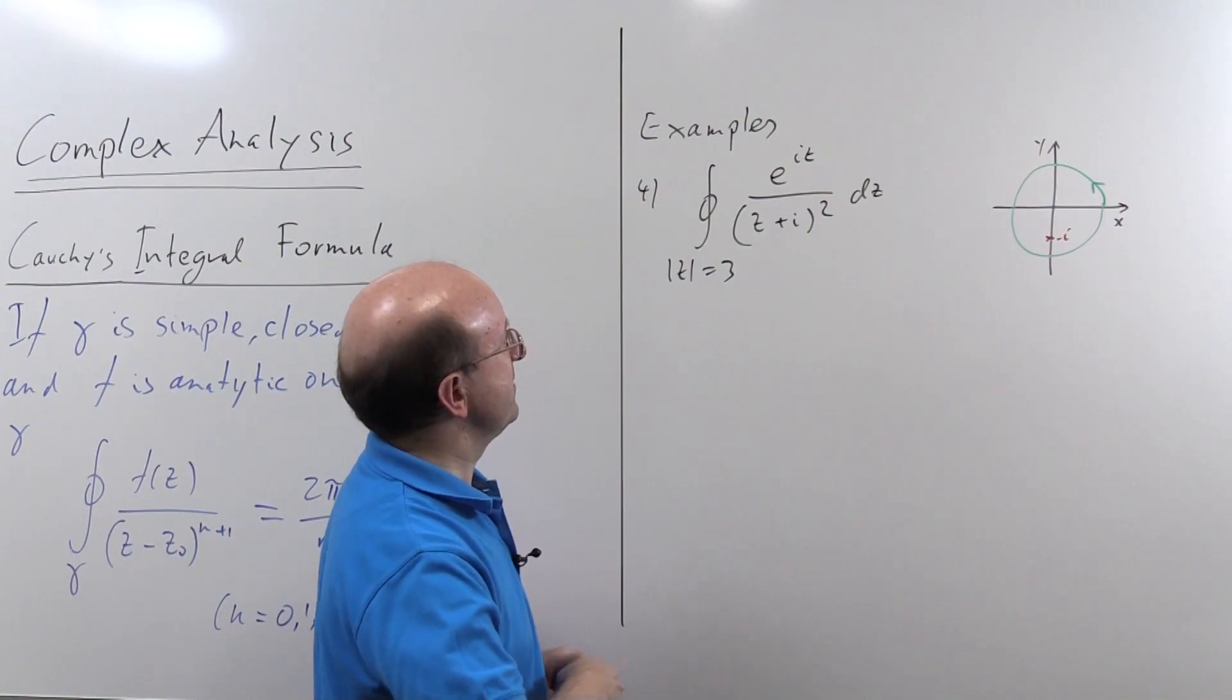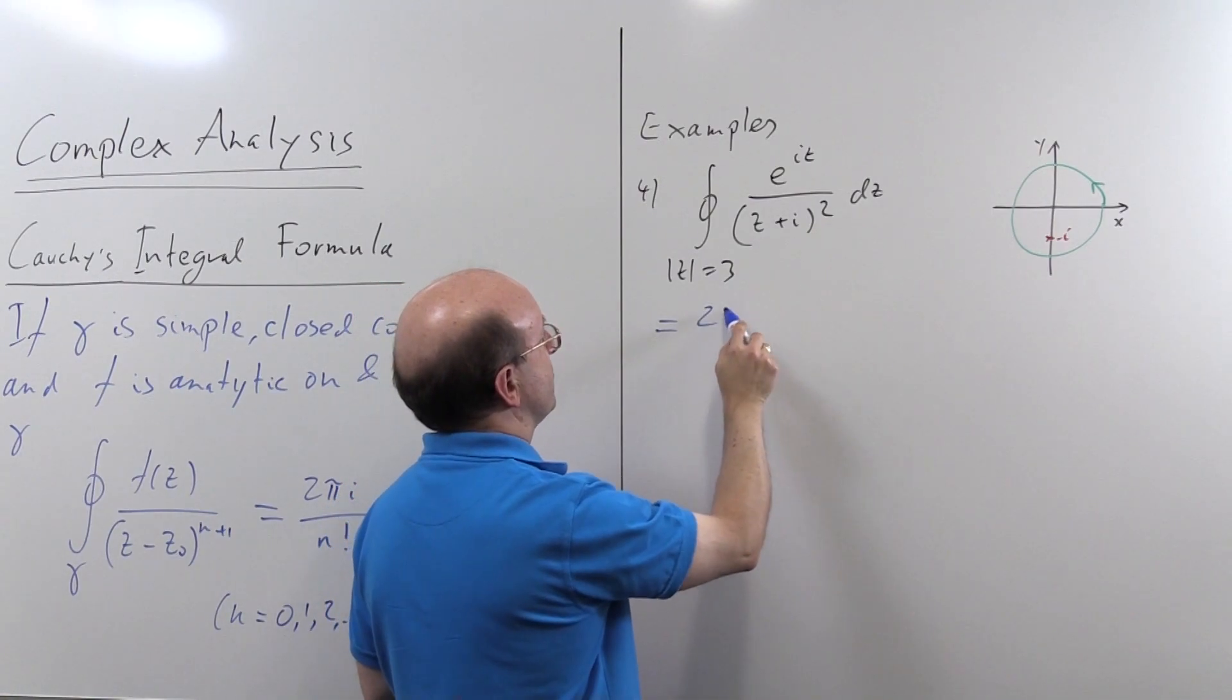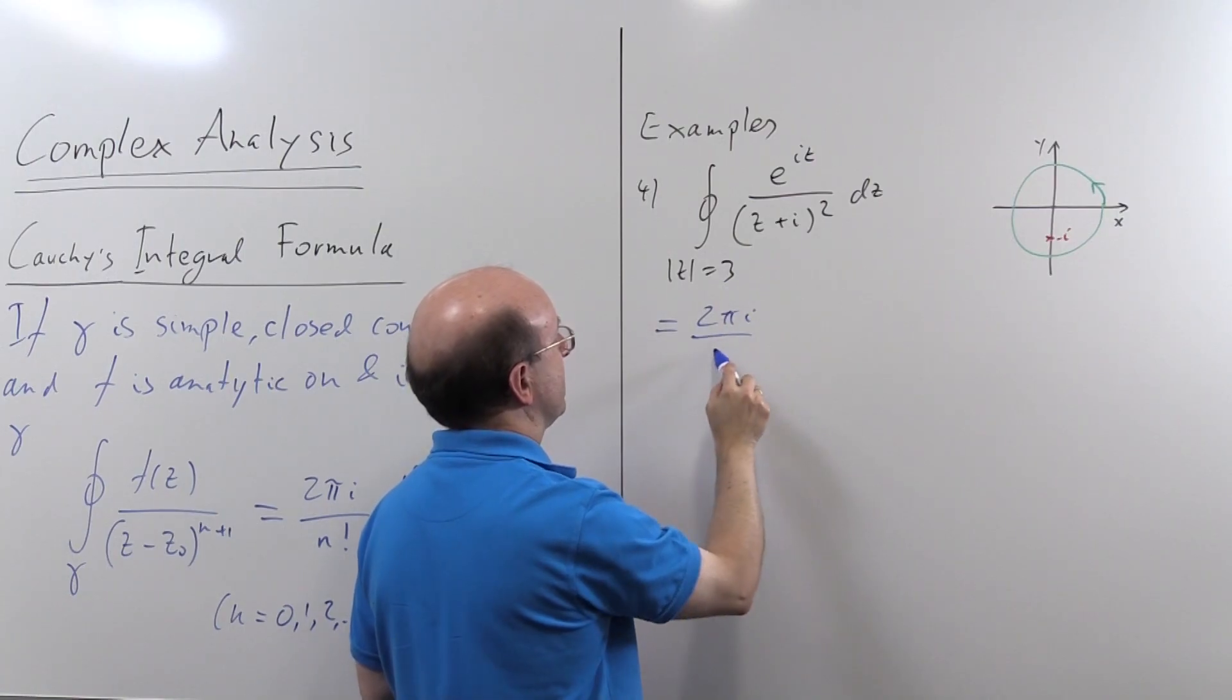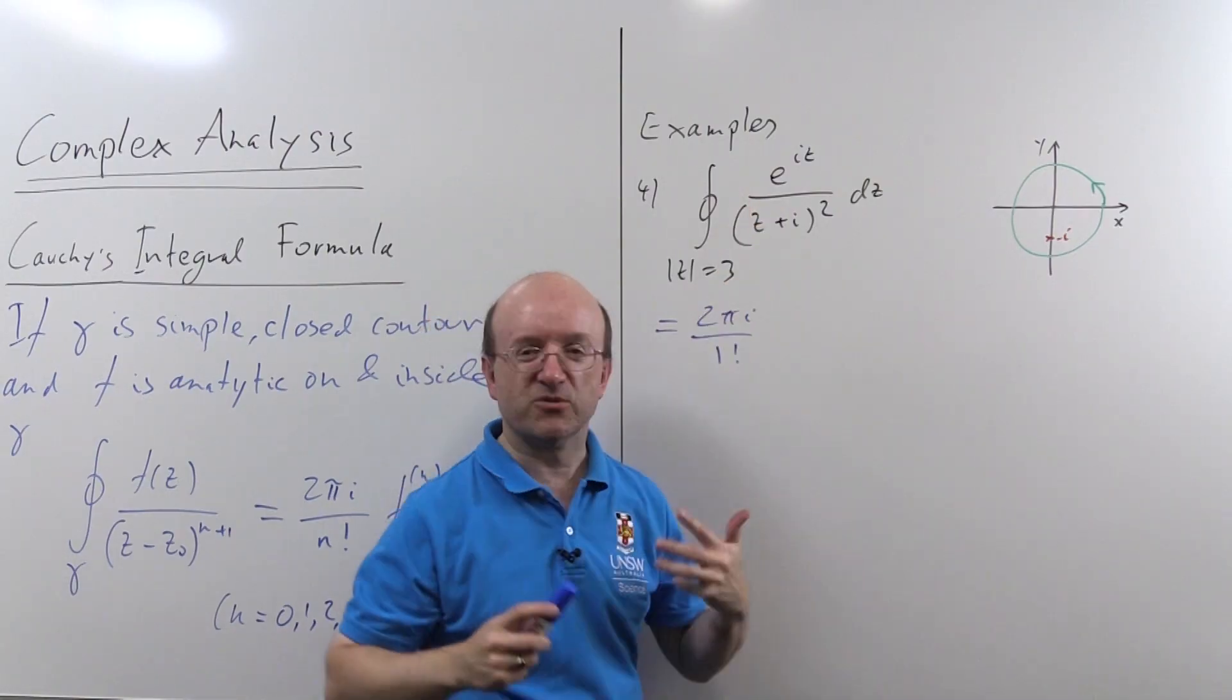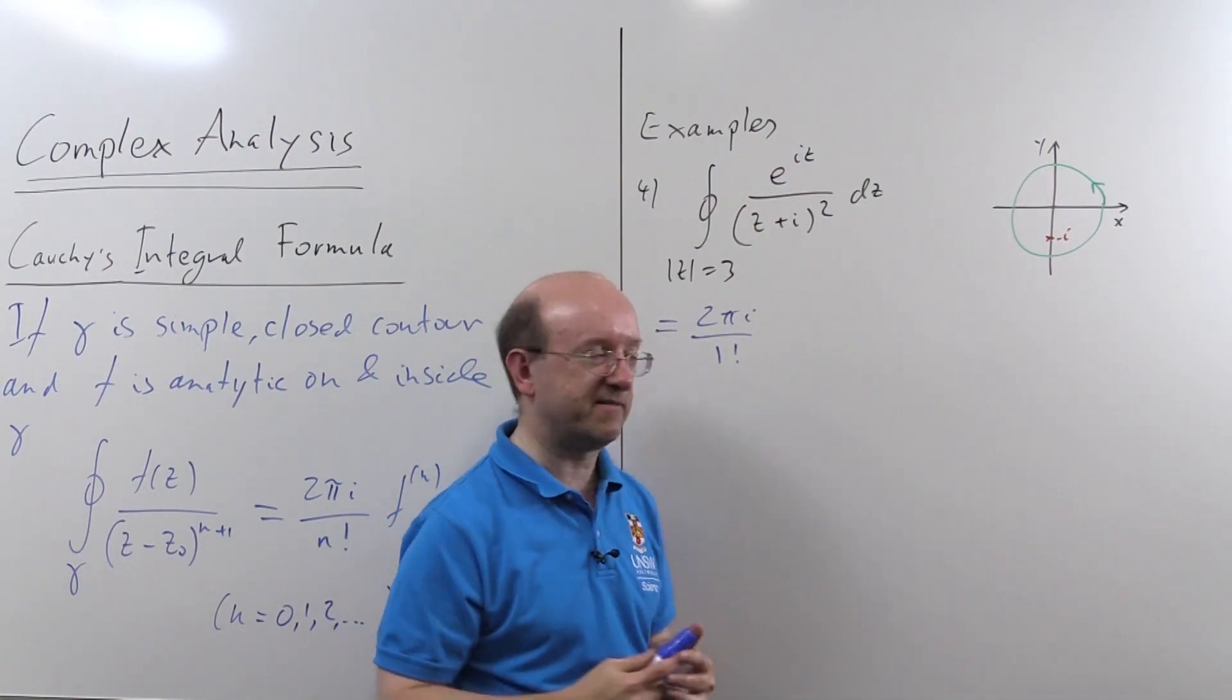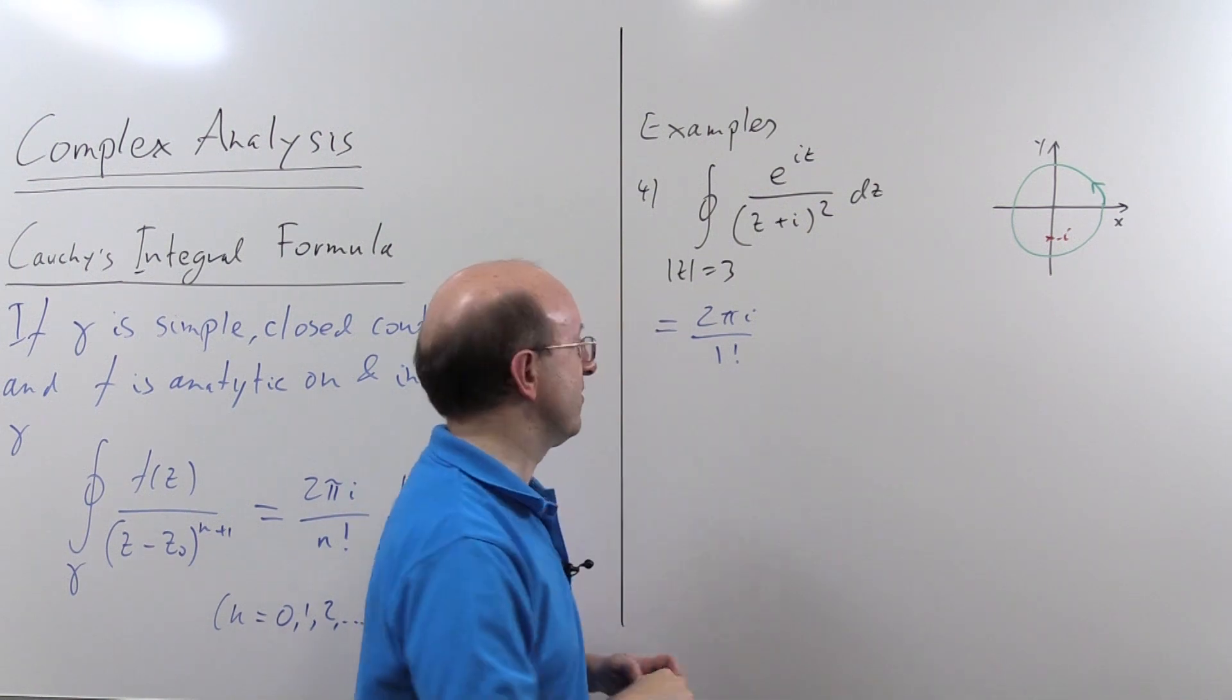But to actually do this problem, then, we're going to say that is, well, of course, the integral formula says that's 2 pi i over 1 factorial. E to the iz, once again, is analytic everywhere, so we don't have that issue, and we're assuming we're going around once anticlockwise. So I've got to differentiate e to the iz once, and I'll use this notation to do that, evaluated at z equals minus i.